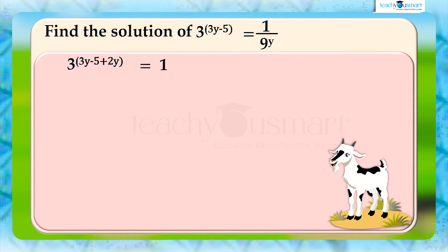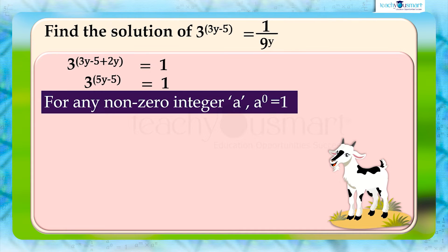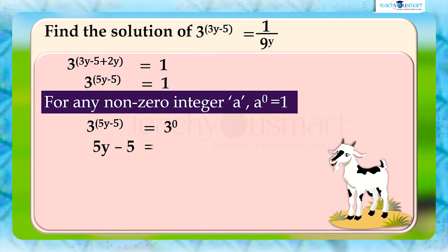That is, 3 raised to (5y minus 5) equals 1. We have that for any non-zero integer a, a raised to 0 equals 1. So we can write 3 raised to (5y minus 5) equals 3 raised to 0, which means 5y minus 5 equals 0.